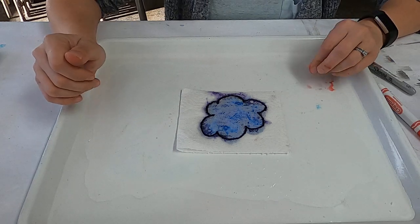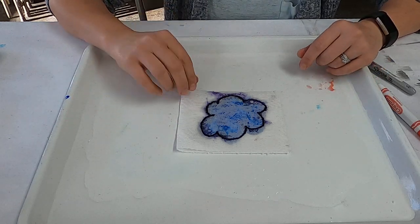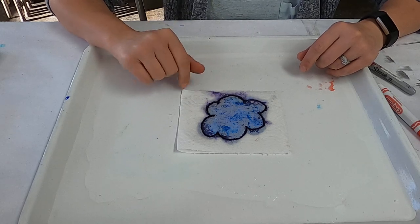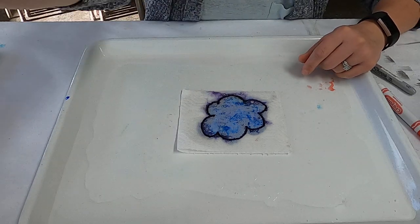So there you go. There's three different ways that you can make a magical bleeding tissue picture with some markers, paper towels, and a little bit of water. Thanks, guys.